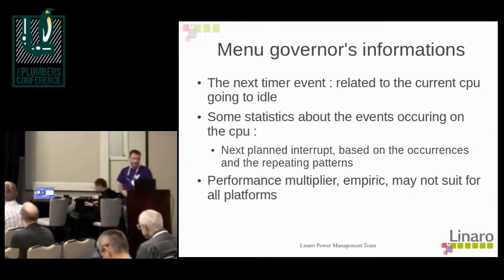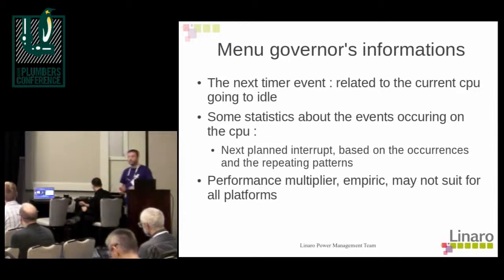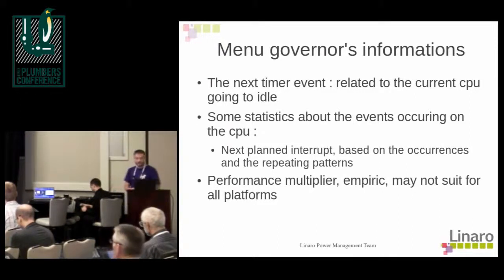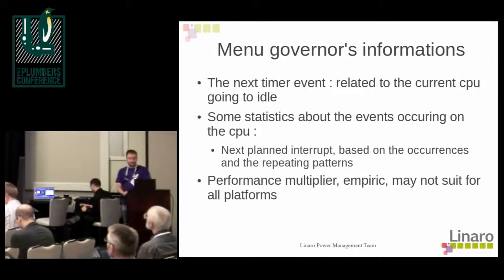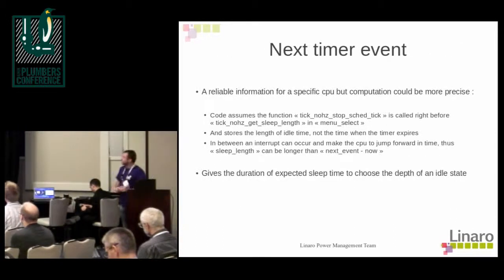The tickless system uses mainly three pieces of information: the next timer event, which is related to the current CPU entering idle; statistics about events occurring on the system, so we try to do statistics on what is happening in the CPU and predict what the next event could be; and a performance multiplier, which is supposed to prevent the system from going to a deeper idle state if we are using the CPU intensively.